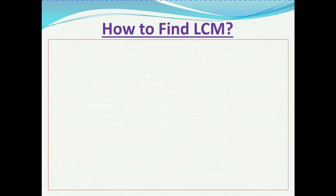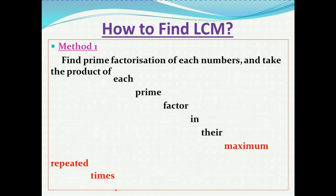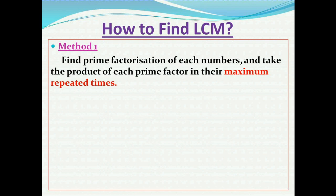This listing method is not always possible, especially for large numbers. So there are different methods to find LCM. Let's see one method: find the prime factorization of each number and take the product of each prime factor in their maximum repeated times. This will be clear with an example — we are taking the same example of 6 and 8.